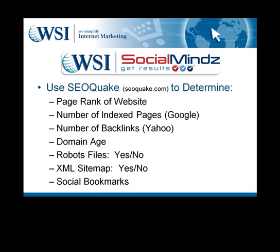SEOquake will provide you a lot of information, but we just want to take a look at the main things that are important when it comes to SEO rankings. The first is page rank — this is a scale from 0 to 10 which Google provides, with 0 being the worst and 10 being the best — and it's really determined by the quantity and quality of links pointing back to your website. Number of indexed pages is important because the more pages you have, the more credit search engines give you. Google's magical mark is around 100 pages, and once your site hits 100 pages, you're considered a resource, which is a lot of value from a search engine perspective.